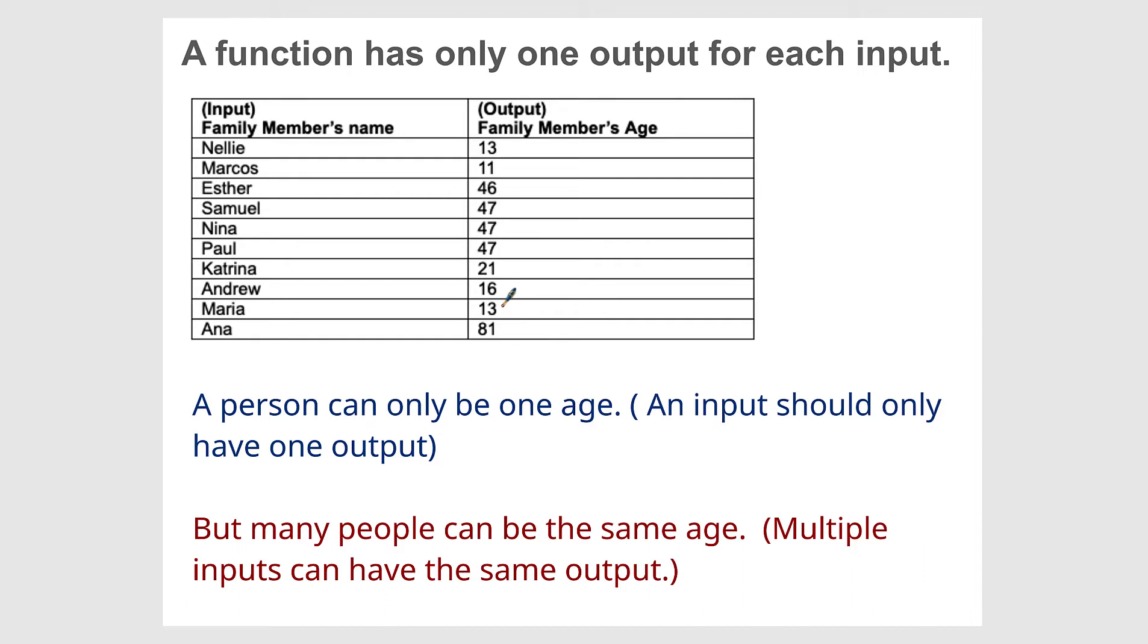This is a great example that I often use with my students to always come back to. And if you think about it, a person can only be one age, meaning an input should only have one output. It can only be one age, but many people can be the same age.